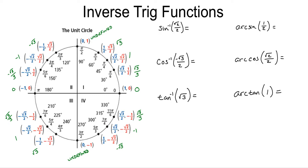Let's try a few examples. For the inverse sine of root 2 over 2 — basically we're asking what angle theta has sine equal to root 2 over 2. There are two values on the unit circle: positive pi over 4 and 3 pi over 4. But since the inverse sine is restricted to the first or fourth quadrant, the only possible answer is pi over 4.